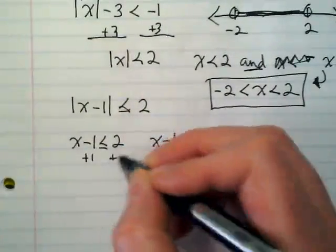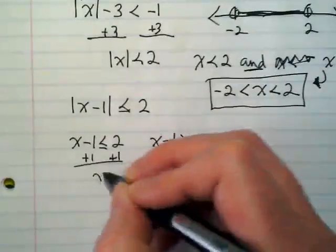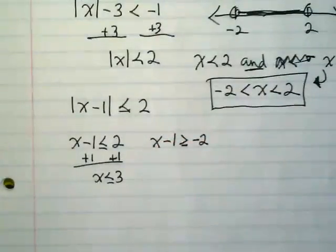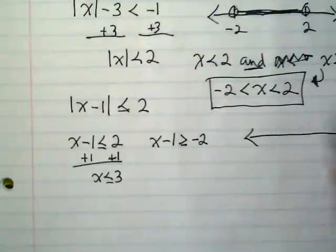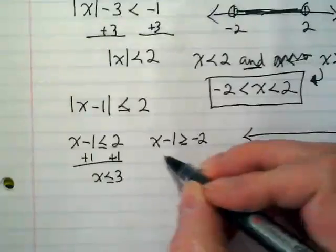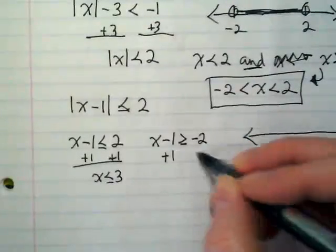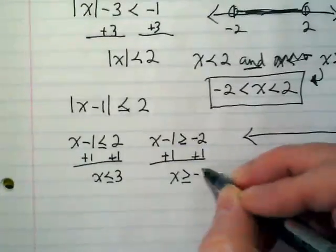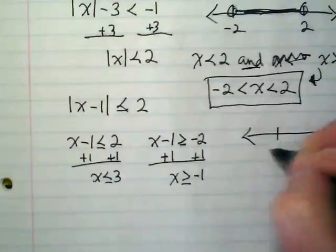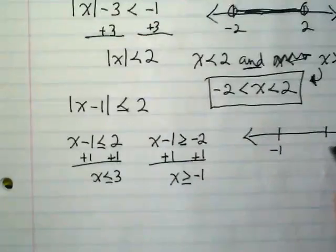I'm going to add 1 to this and I get x is less than or equal to 3. And I'm going to start thinking about my graphing over here as I go. I'm going to add 1 to the other inequality and I get x is greater than or equal to negative 1. So I get negative 1, positive 3.